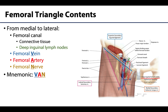The femoral artery is just lateral to the femoral vein. This artery is the continuation of the external iliac artery past the inguinal ligament and is the dominant supply to the lower limb. It gives off its largest branch — the deep artery of the thigh — within the femoral triangle.